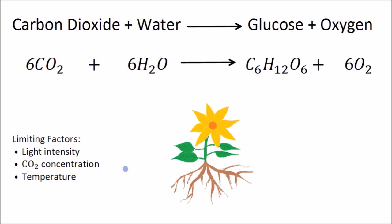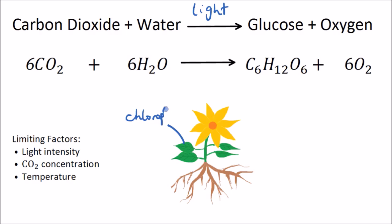For a plant to grow fast, it needs to have a fast rate of photosynthesis. If we look at the equation, we can see that a number of factors can affect the reaction, and there needs to be a sufficient supply of these things in order for photosynthesis to be optimized. For example, carbon dioxide would be one, water might be another, and light would be another factor affecting the rate of the reaction.